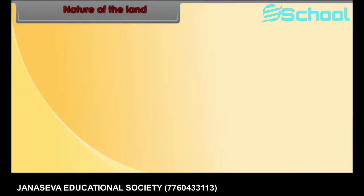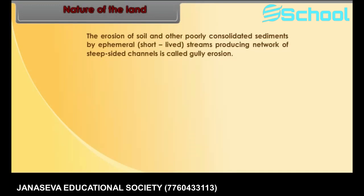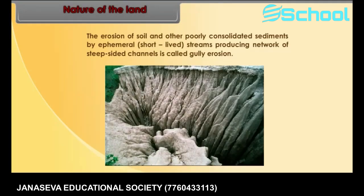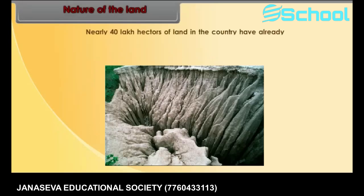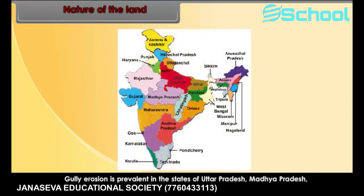Gully erosion. The erosion of soil and other poorly consolidated sediments by ephemeral — that is, short-lived — streams producing a network of steep-sided channels is called gully erosion. Nearly 40 lakh hectares of land in the country have already been degraded due to gully erosion. Gully erosion is prevalent in the states of Uttar Pradesh, Madhya Pradesh, Bihar, Rajasthan, and Gujarat.